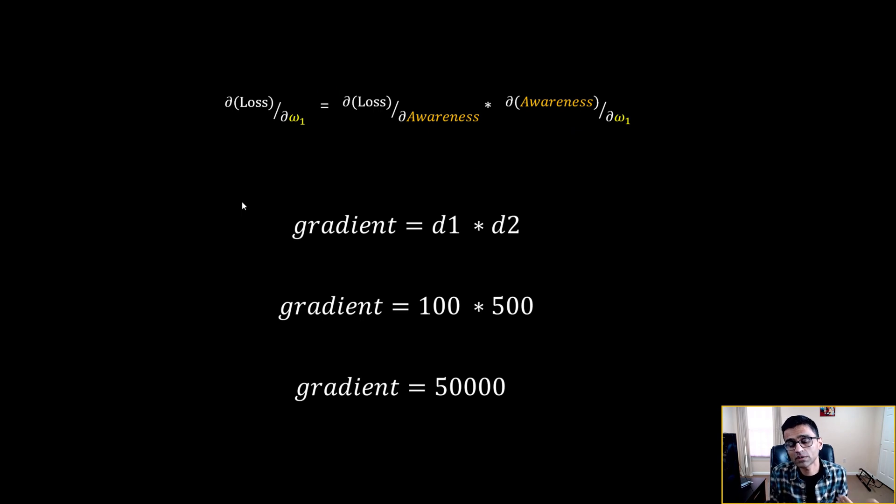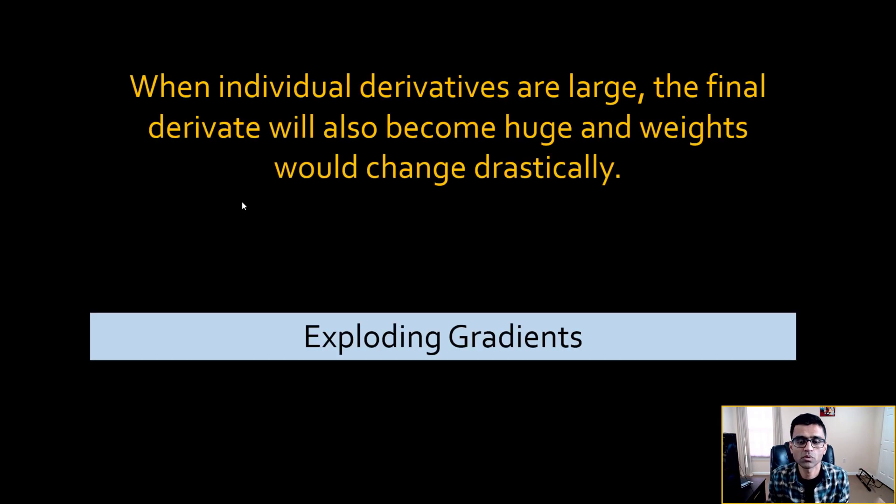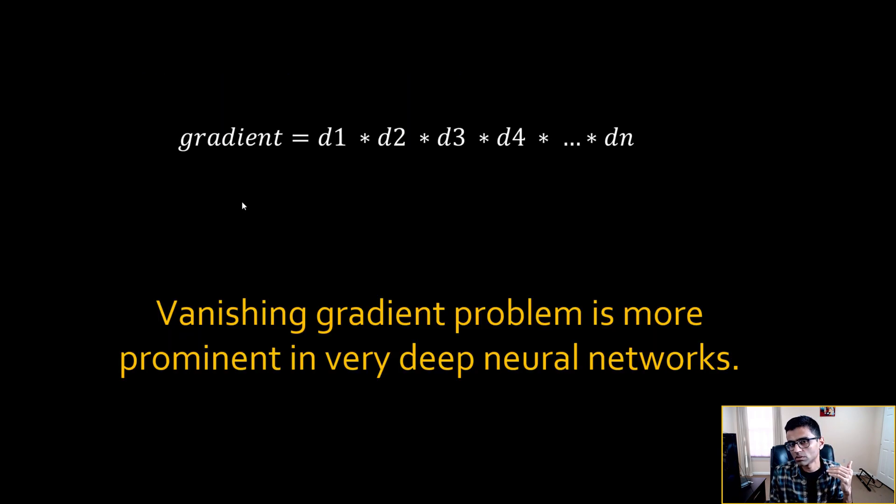On the other hand, if the d1 and d2, the values of individual derivatives, are bigger, then the resulting number will be even bigger. So when you have a product of multiple numbers and individual numbers are big, your overall product will be very big and this is called exploding gradients. Now when you think about deep neural networks which have n number of layers, your gradient becomes even smaller. So vanishing gradient problem is more prominent in deep neural networks.